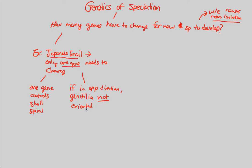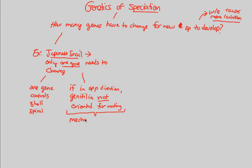They are not oriented for any possible mating event. This is critical in speciation — what we've been talking about over and over again — and it's exemplified through simply one gene changing. In the Japanese snail, only one gene needs to be changed because you're absolutely changing the way reproduction happens by completely changing the orientation for a possible mating event. You are literally creating, through one gene change, a strong and powerful mechanical barrier to this reproduction event.